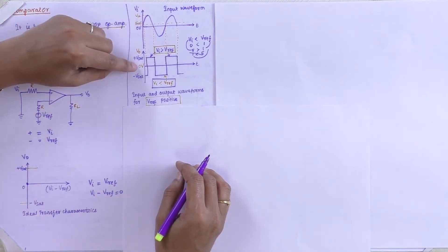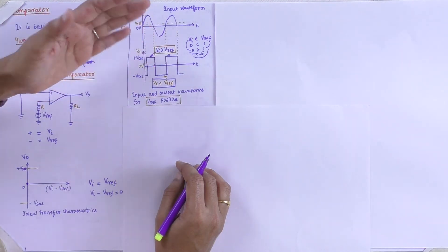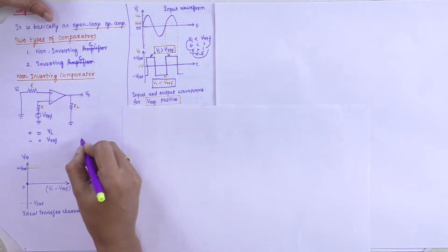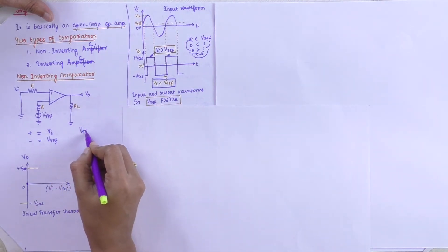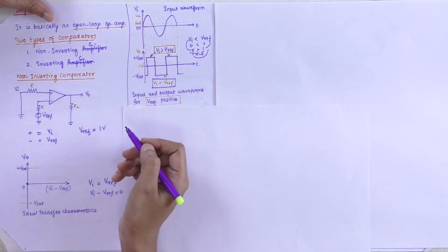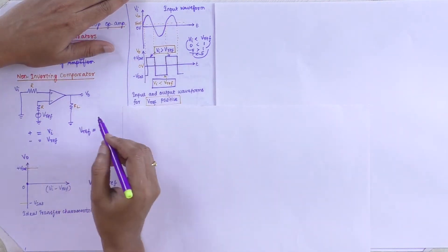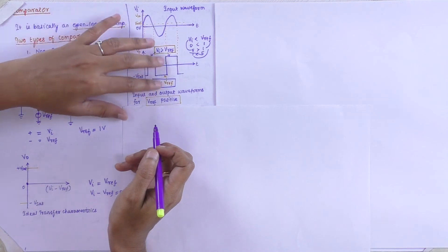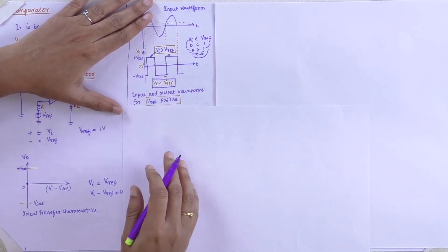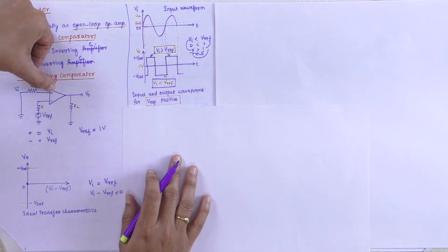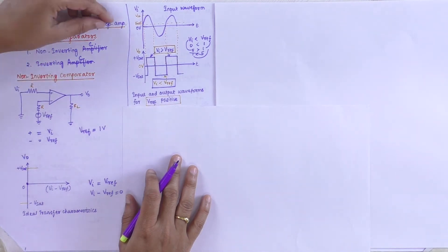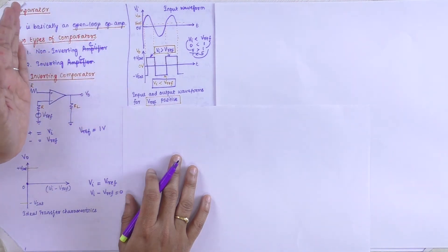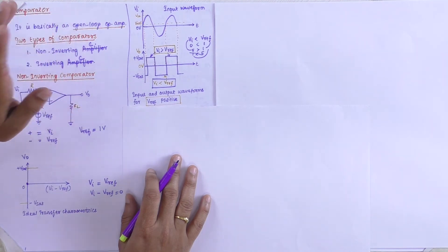This is the input waveform and the output waveform considering V reference as a positive value. Considering V reference as 1 V and varying the input voltage, comparing V reference and VI, we draw the output waveform. This is a non-inverting terminal connected to the positive input. It is basically an open loop configuration — there won't be any feedback between the output and input.